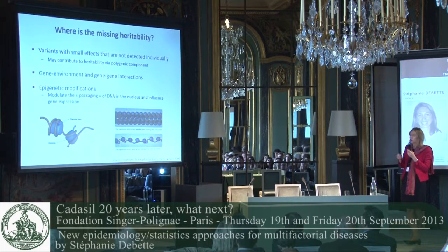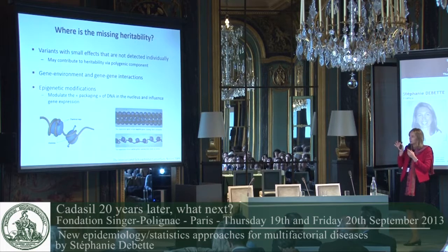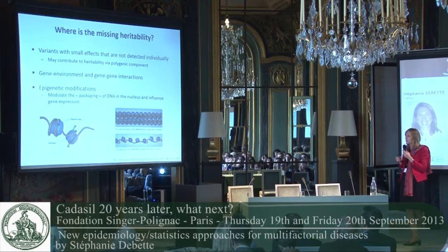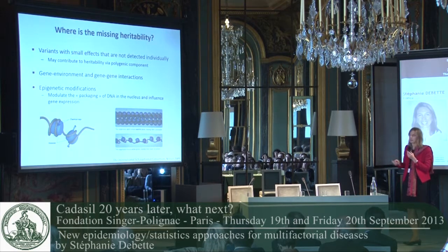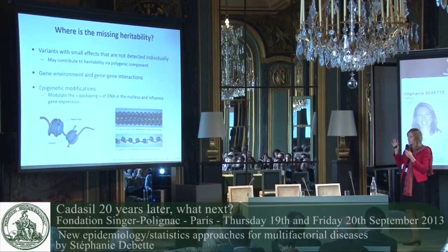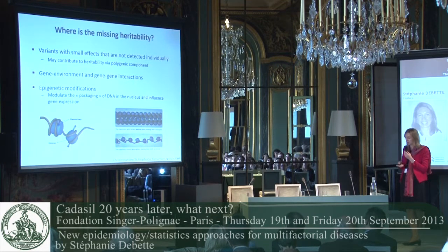The polygenic component has been popular lately as well — variants with small effects may not be detected individually, but when combining them in a polygenic score, this may also contribute to the heritability of diseases. Gene-environment and gene-gene interactions haven't been accounted for sufficiently yet. Finally, not all genetic variation lies at the level of nucleotides; there are also epigenetic modifications such as changes that modulate the packaging of DNA and can influence the expression of genes.